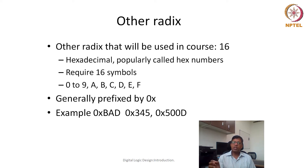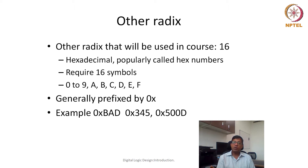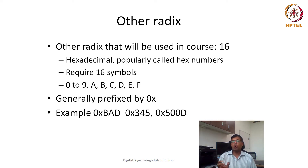Hexadecimal means there are 16 symbols because the base is 16, so we require 16 different symbols. How do we get these 16 different symbols? The first 10 symbols are borrowed from the decimal numbers: 0, 1, 2, 3, 4, 5, 6, 7, 8, 9. But after that it would be confusing, so 6 symbols have been borrowed from the alphabets.